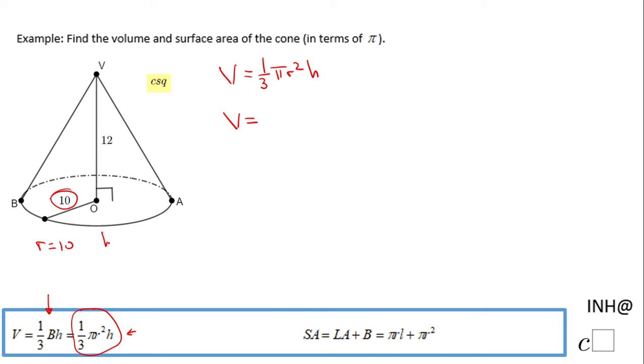We know the height, the height is 12. So it's nothing else than just replacing the r and h with these values. So 1 over 3 times pi times 10 squared times the height which is 12. So we're gonna